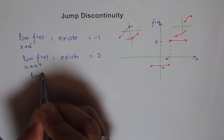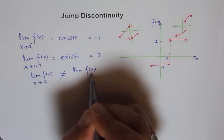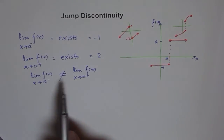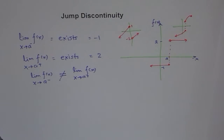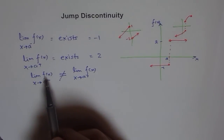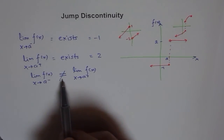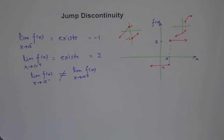But both limits are not the same. The limit of f(x) as x approaches a from the negative side is not equal to the limit of f(x) as x approaches a from the positive side. So if we are approaching a from the left and from the right but the limits are different, then we have a case of jump discontinuity. That is the definition: for a function f(x), it has a jump discontinuity at x = a if both one-sided limits exist but are unequal.